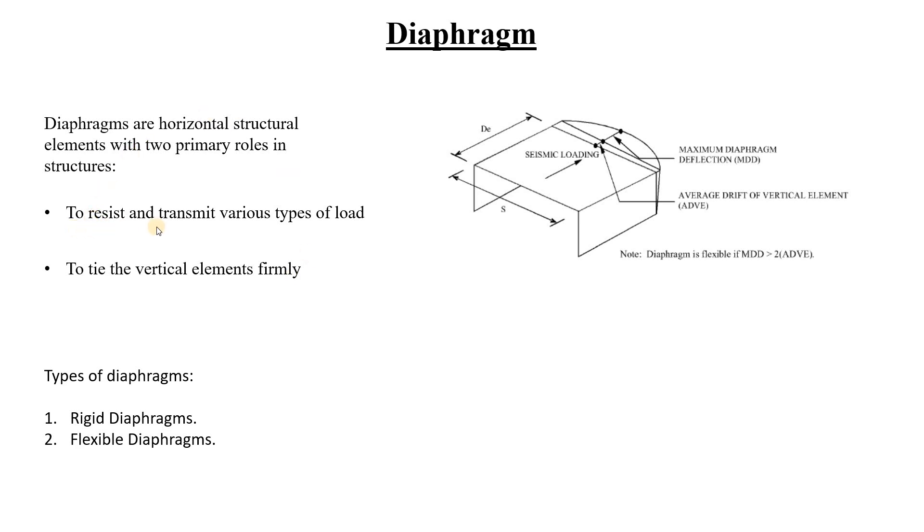The first role, or actually there's no first and second, they just have two primary roles: to resist and transmit various types of load and to tie the vertical elements firmly.